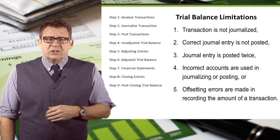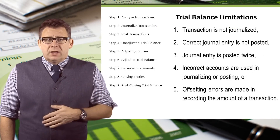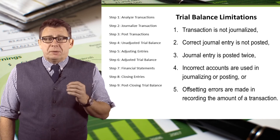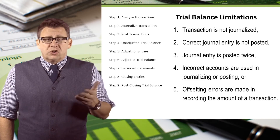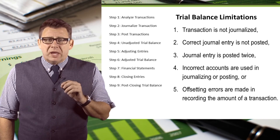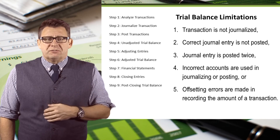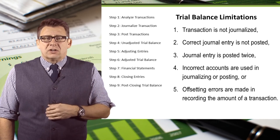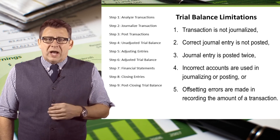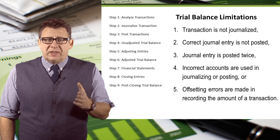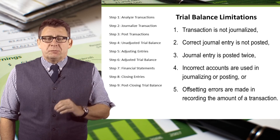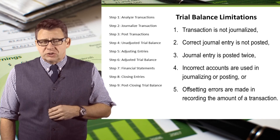So there are limitations to the unadjusted trial balance, including: some transactions may not have been journalized; the correct journal entry might not have been posted; a journal entry may have been entered or posted twice; incorrect accounts may have been used in the journalizing or posting of transactions; or offsetting errors are made in the recording of transactions. This is why we need to perform the next step in the accounting cycle — adjusting journal entries — so we can adjust the account balances to more accurately reflect the financial position of a company.